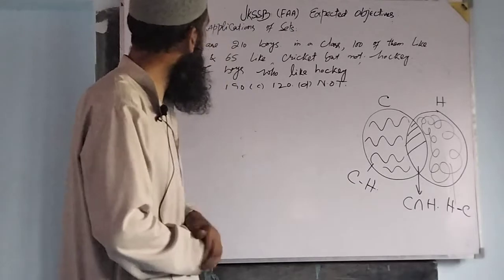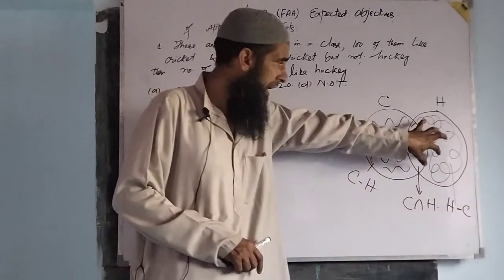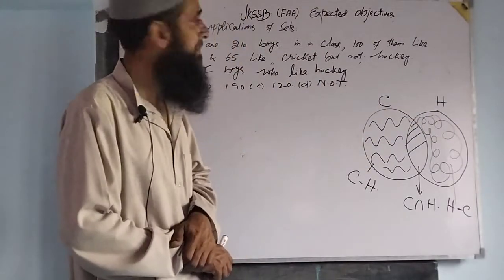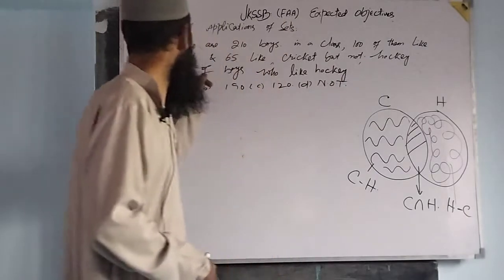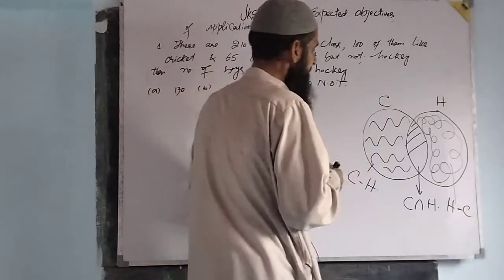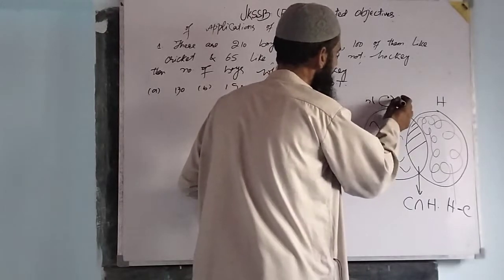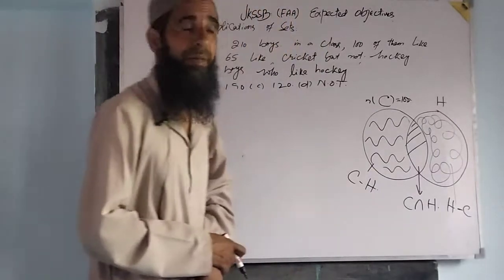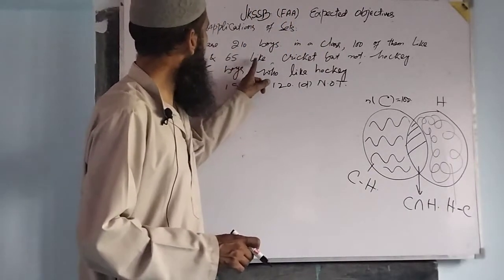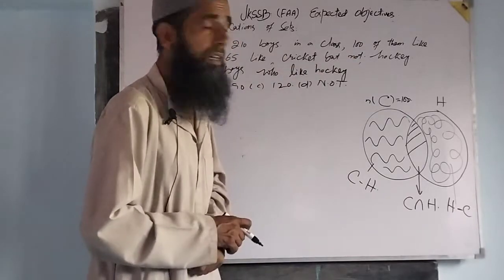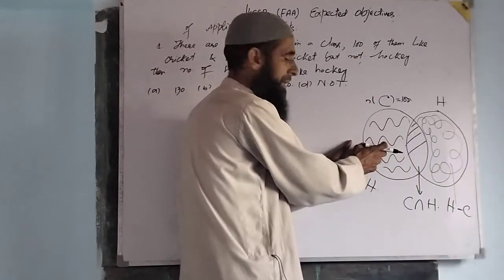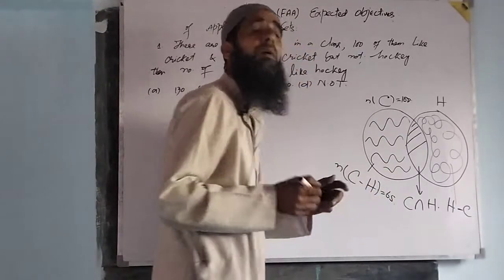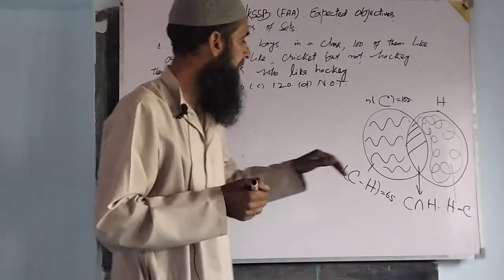Now we see the condition. There are 210 boys in total. We have 100 of them who like cricket — the number of elements in C is 100. In C, we have 100 elements. We have 100 minus 65, which means C minus H equals 65. That is the number of boys who like cricket but not hockey.